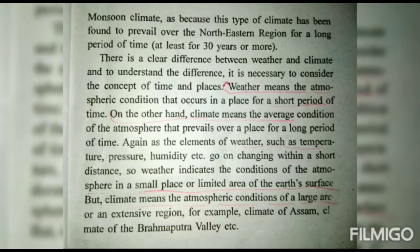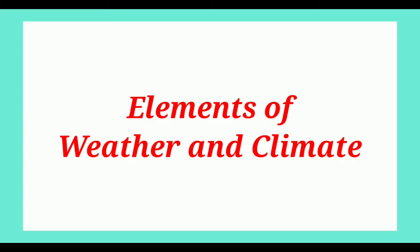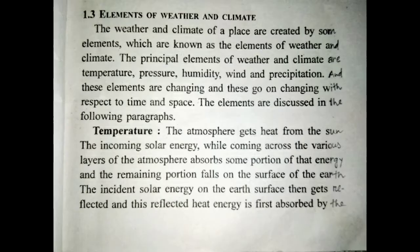Since elements of weather such as temperature, pressure, and humidity change within a short distance, weather indicates the condition of the atmosphere in a small or limited area. But climate means the atmospheric condition of a large or extensive region — for example, the climate of Assam. The weather and climate of a place are created by certain elements known as the elements of weather and climate.